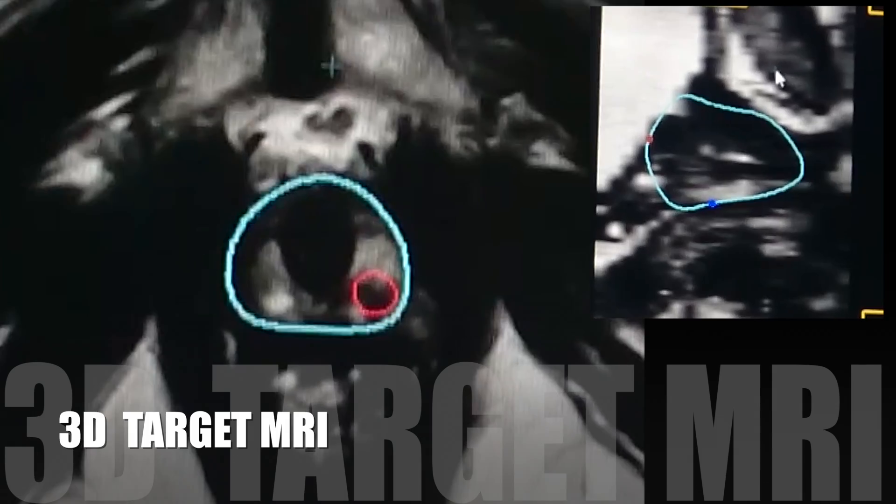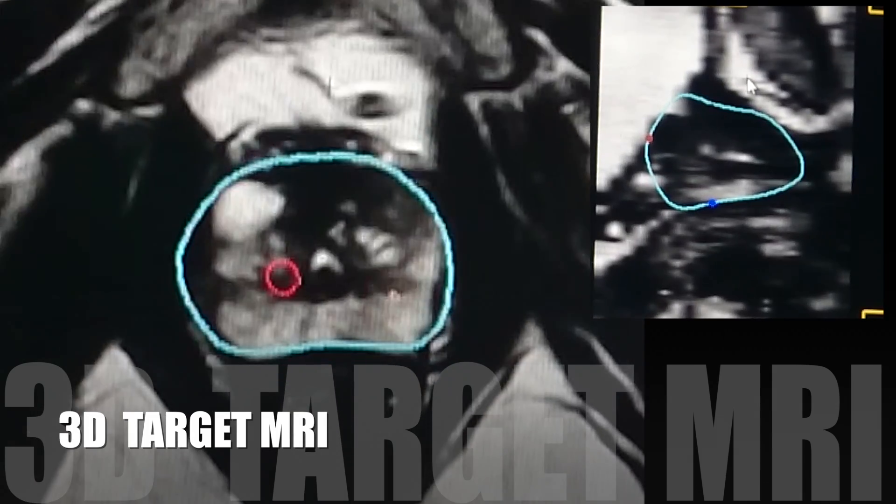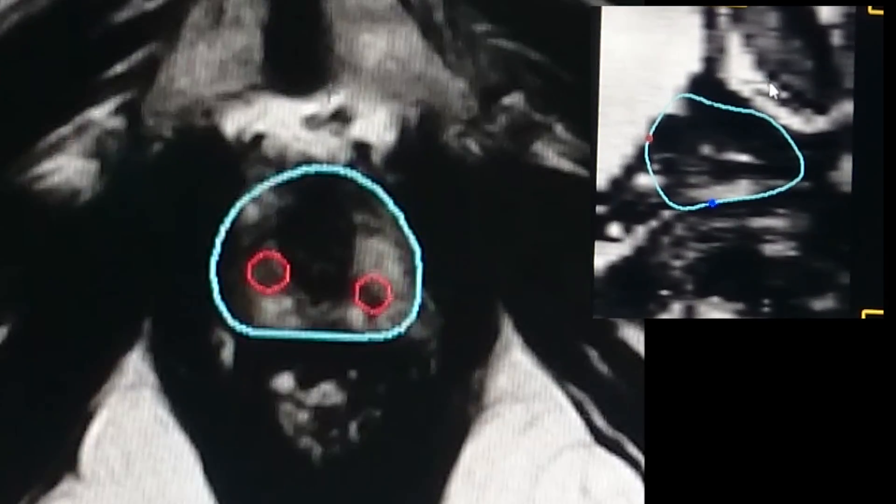Different targets can be delineated on MRI and appear on the ultrasound images with millimeter precision.